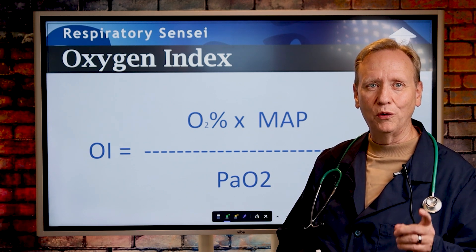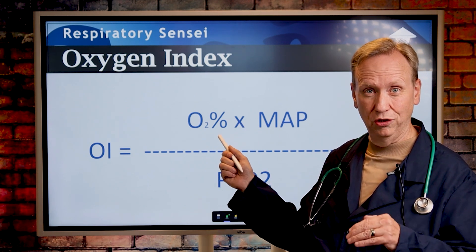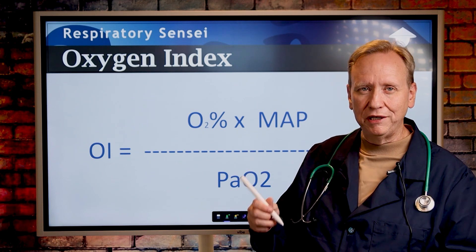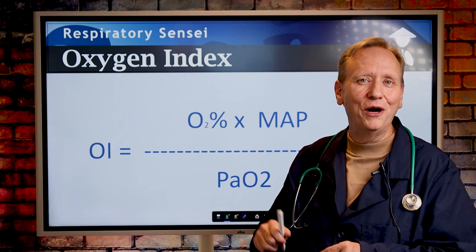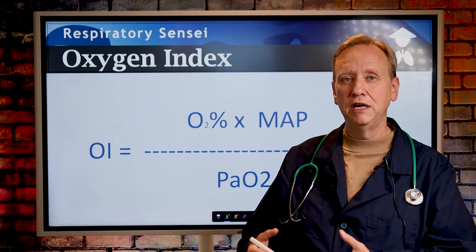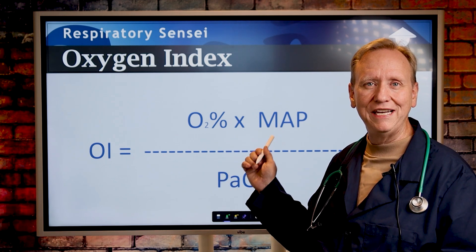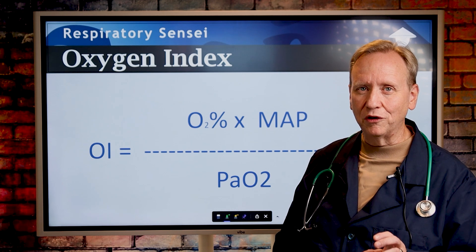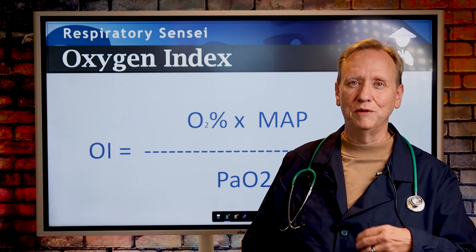The Oxygen Index looks at cost in the numerator — two things: the FiO2 or oxygen percentage you have to use (low or high?), and the mean airway pressure. Be careful: MAP sometimes refers to mean arterial pressure, which is a hemodynamic value — here we're talking about mean airway pressure. So the cost is: how much mean airway pressure do I have to expose the body to in order to get the PaO2 I want? In the numerator, we take the O2% and multiply it by the mean airway pressure, then divide by the resulting PaO2. We're calculating the cost it takes to achieve a specific PaO2, and that cost comes in the form of ventilator settings.